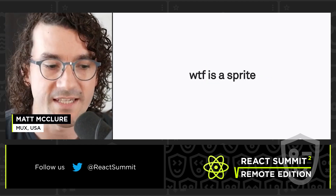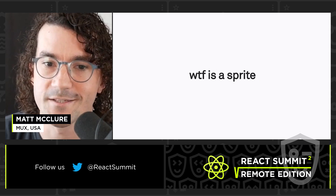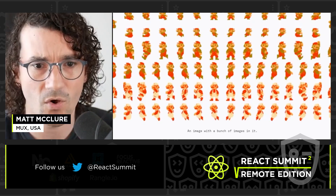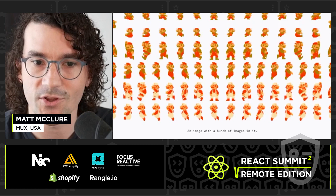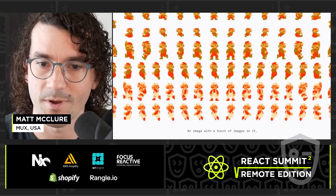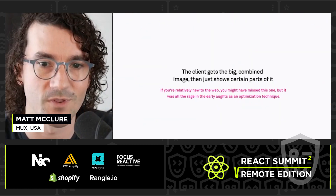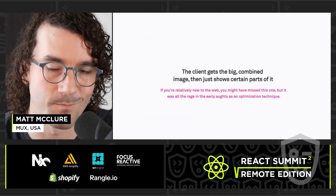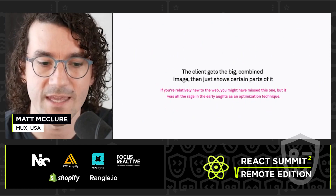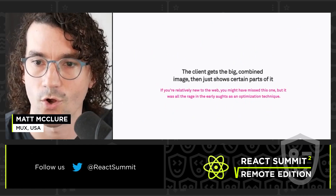So, taking a step back — what is a sprite? In a nutshell, this is an image with a bunch of images in it. So the client gets this big combined image and then can just pick and choose which parts of it to show.